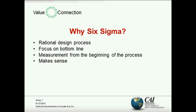So why Six Sigma? It is rational. One of the changes it made over the older total quality management was a focus on the bottom line. You choose projects based on the effect on the business. In total quality management, we might bring quality improvement to something that really didn't matter that much to the business — and that's not the case with Six Sigma.